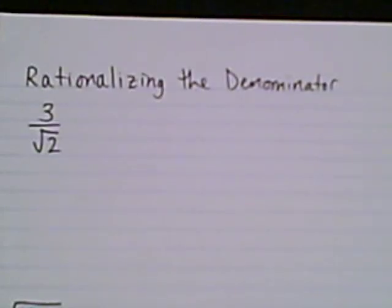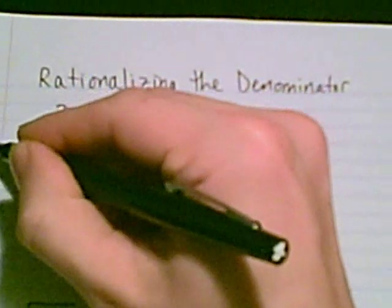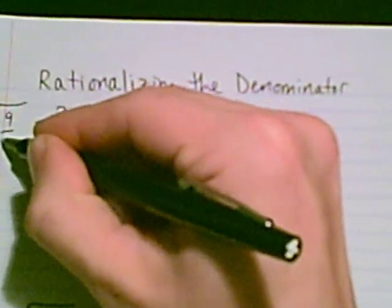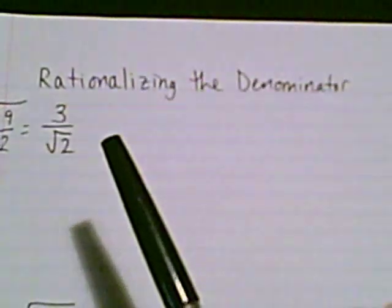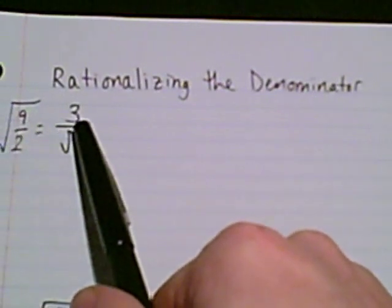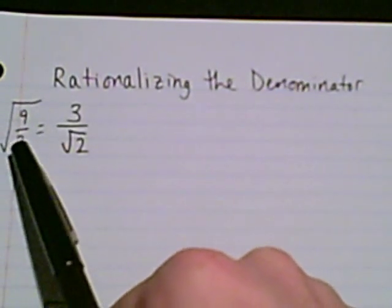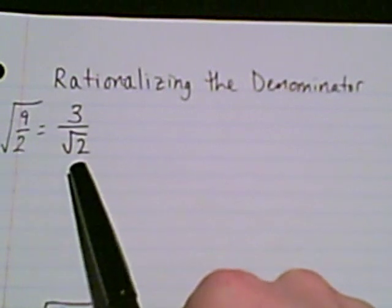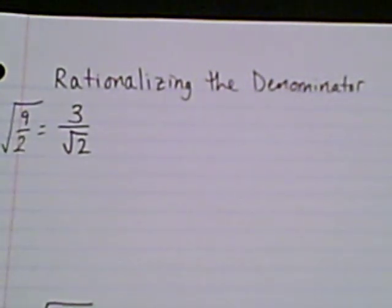Here's the video for rationalizing the denominator, and we begin with a problem that was the last one we looked at as part of simplifying radicals examples. It started off as radical 9 over 2, and we had a perfect square in the numerator that radical 9 became 3, but in the denominator we could not simplify that radical 2, so there it shows up in the denominator.